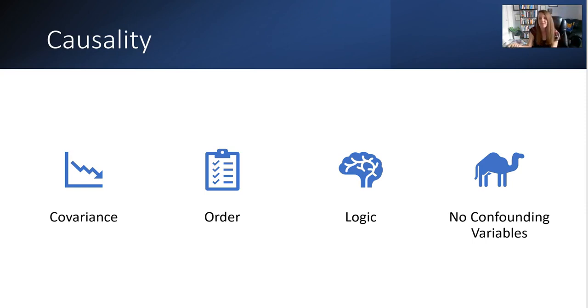And then confounding variables. I think this is probably one of the most common ones that I've seen in my practice and research. This was the problem with the ice cream example. The heat was the confounding variable. That there was something else at play besides those two things that could explain the connection or the relationship between them.